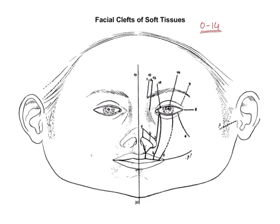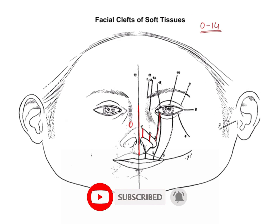Looking at the soft tissue facial clefts numbered 0 to 14: Type 0 is a median cleft involving the nose and maxilla in the midline. Type 1 is adjacent to the midline, type 2 is lateral to type 1, and type 3 extends superiorly to involve the medial portion of the orbit. Type 4 extends lateral to type 3, running from the upper lip to the lower border of the orbit. Type 5 extends up to the inferior border of the orbit, lateral to types 3 and 4. Type 6 extends from the inferior border of the orbit towards the cheek region, and type 7 is a horizontal cleft running from the angle of the mouth, extending in some patients up to the tragus of the ear.